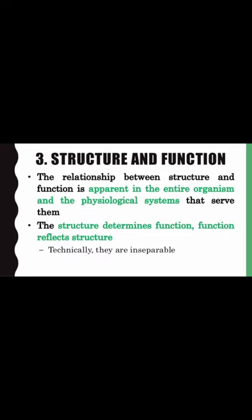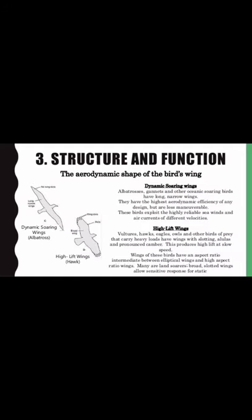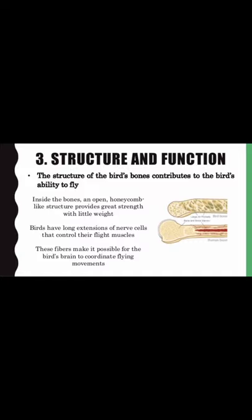Theme 3 — Structure and function: the relationship between structure and function is apparent in the entire organism and the physiological systems that serve them. Structure determines function; function reflects structure — technically, they are inseparable. The aerodynamic shape of a bird's wing and the structure of the bird's bones contribute to the bird's ability to fly. Inside the bones, an open, honeycomb-like structure provides great strength with little weight. Birds also have long extensions of nerve cells that control their flight muscles, making it possible for the brain to coordinate flying movements.